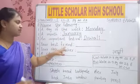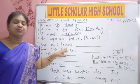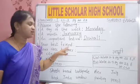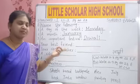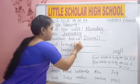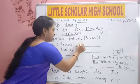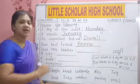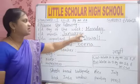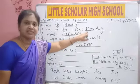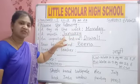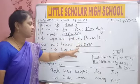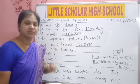Your best friend — you will write your best friend's name. I am writing here Reena: R-E-N-A. Here you can see Monday starts with capital, January we wrote with capital, Diwali we wrote with capital, Reena we wrote with capital.